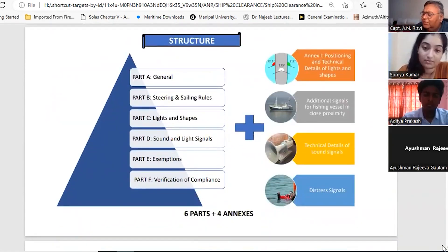Now let's talk about the structure. There are six parts - A, B, C, D, E, F. F is a newly added part about verification and control. Part A is general, Part B is steering and sailing, Part C lights and shapes, D is sound and light signals, Part E is exemptions.